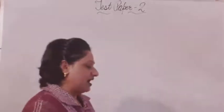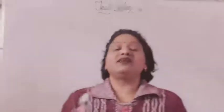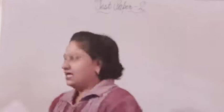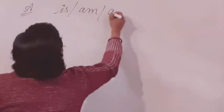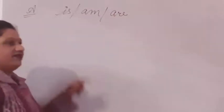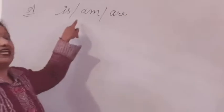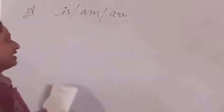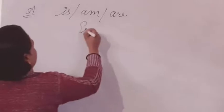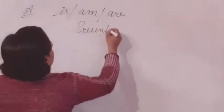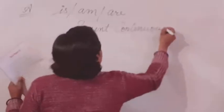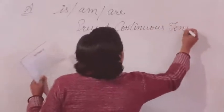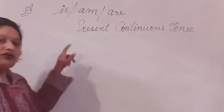The first question is about the use of IS, M, and R — ISMR. This is used in the present continuous tense. We will apply a few rules here.